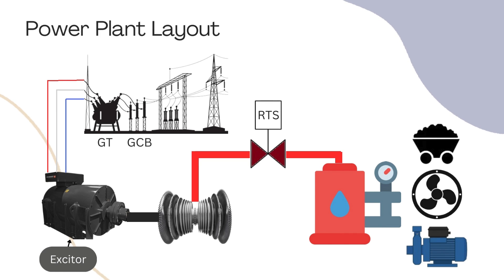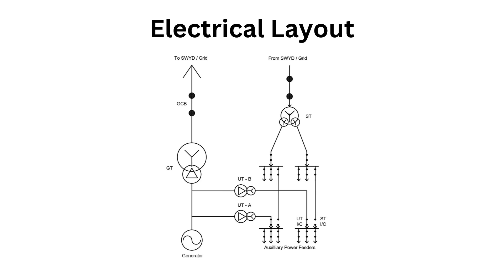To rotate the shaft of the turbine we need steam, and to generate steam we need a boiler. The boiler also needs water to generate steam, coal to heat the water, and air for combustion. To run the system, electricity is required, which is fed by the Unit Transformers (UT). This power comes directly from the output of the generator to run coal mills, fans, pumps, and other auxiliary systems.